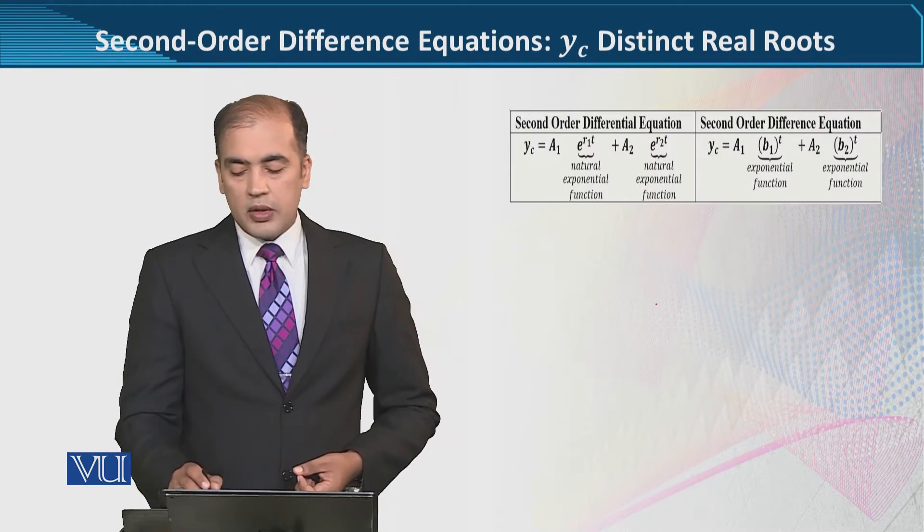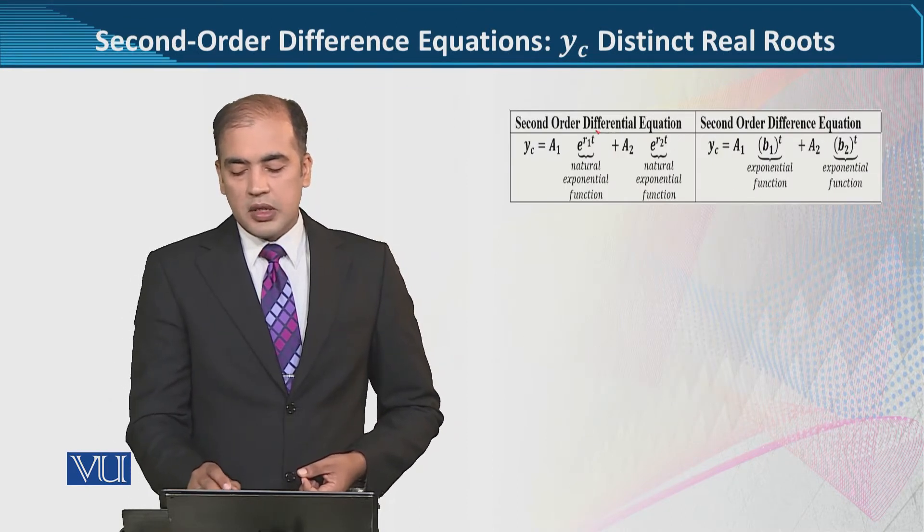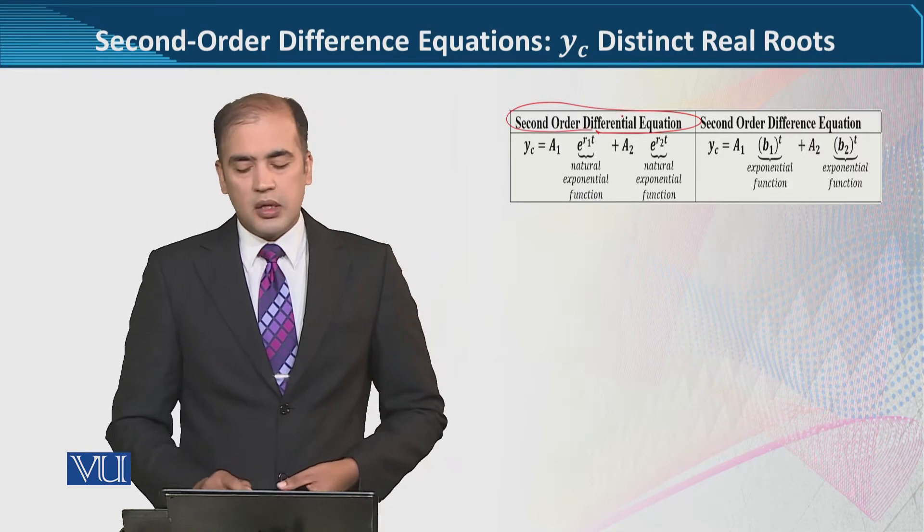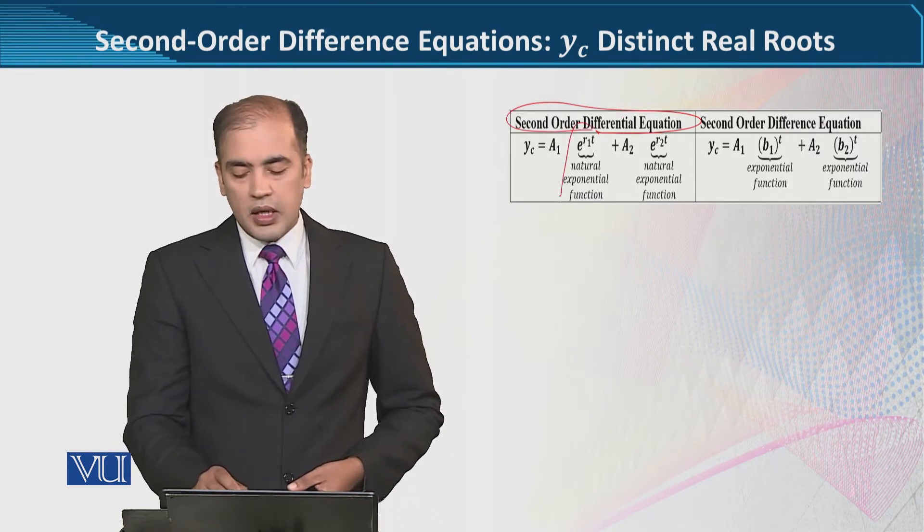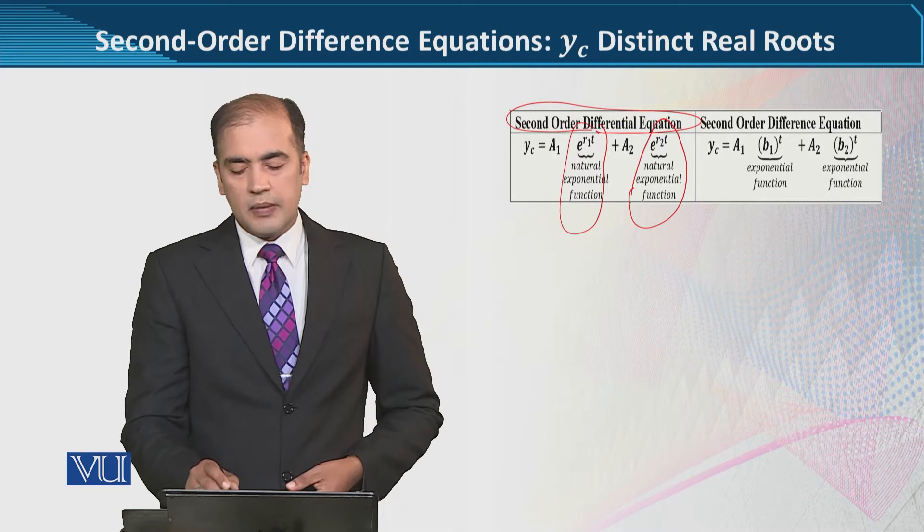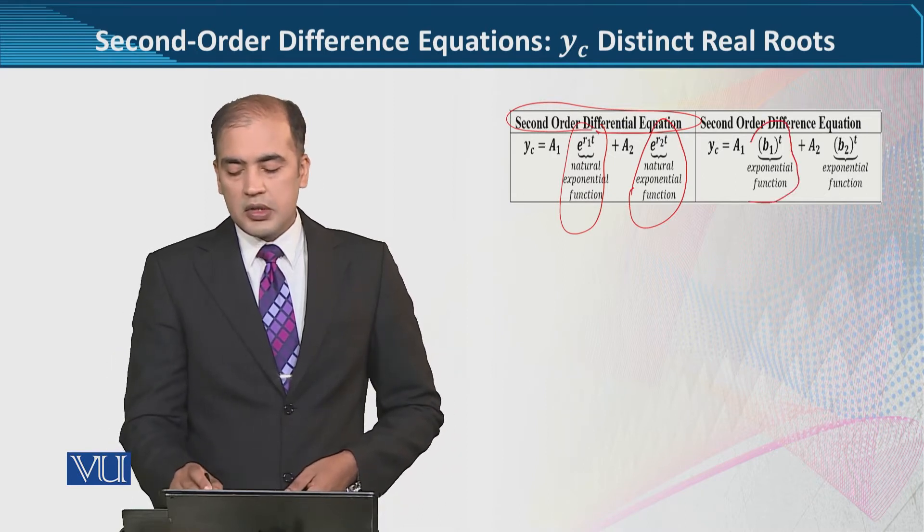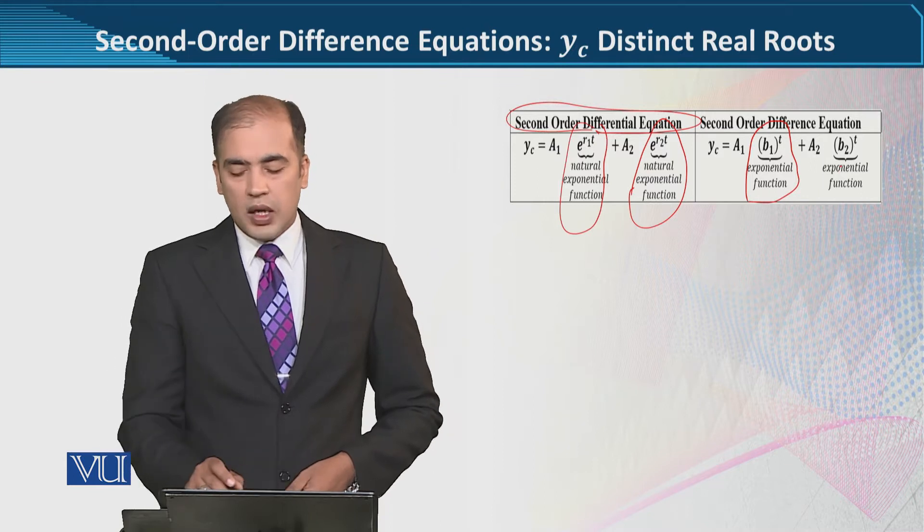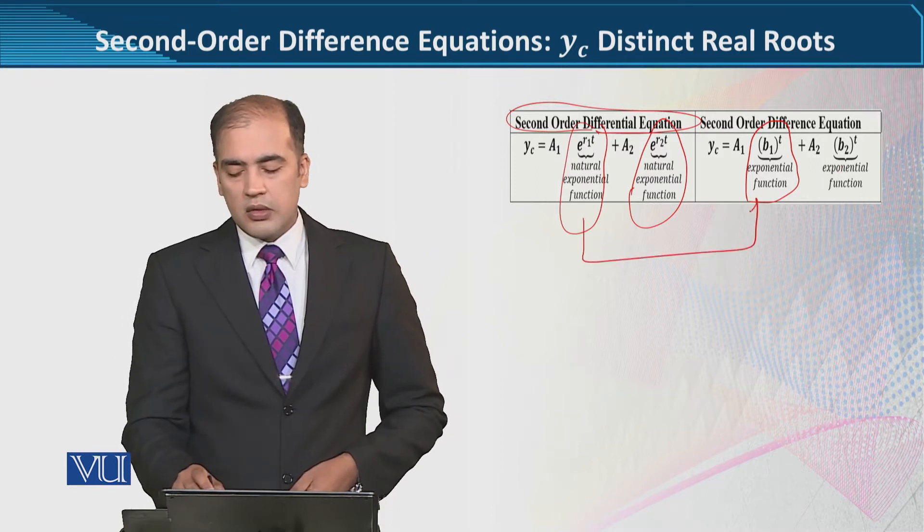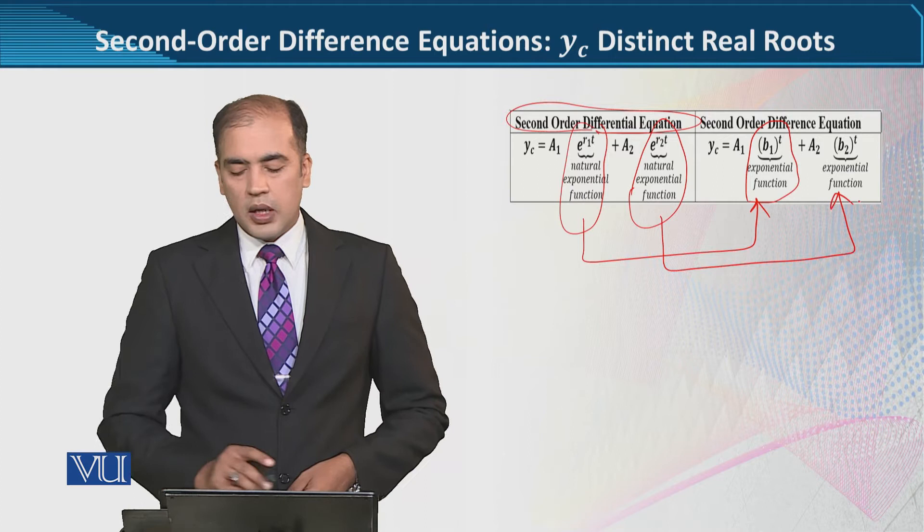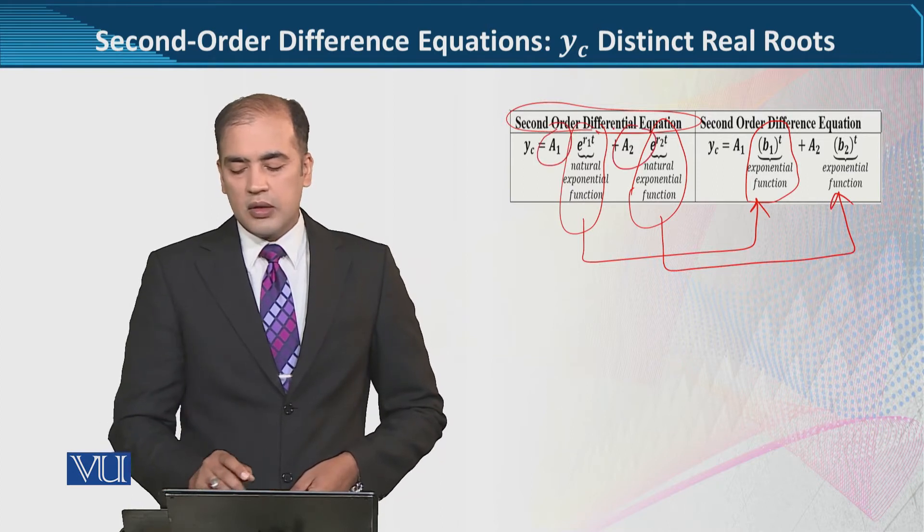So here we have two comparisons: the differential equation, the second order which we have studied, and in this case there was a natural exponential function. And in this case you can see that there is an exponential function which is B involved. So when we have two exponential functions, we have two arbitrary constants A1, A2.